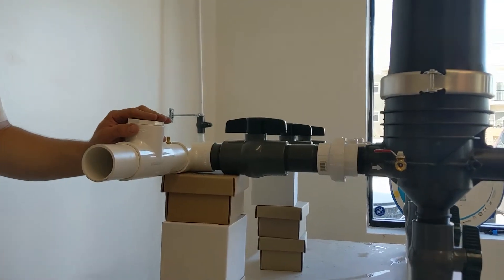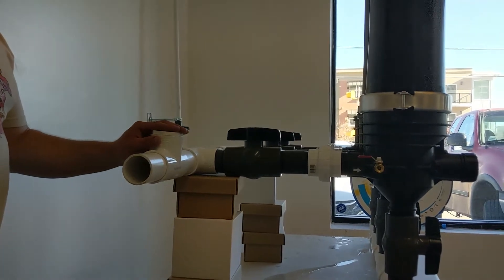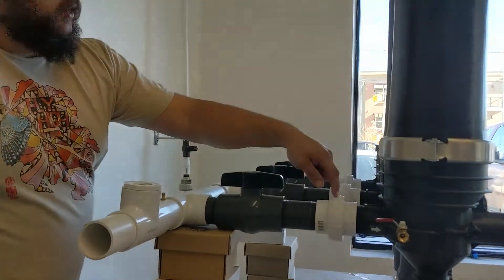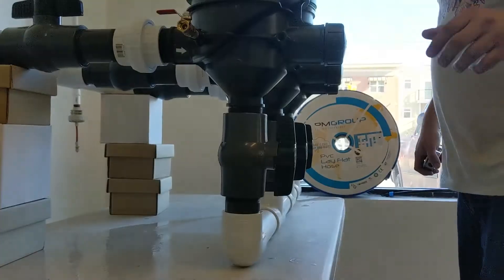This would be at the input side of a filter system like this. In this case it's a two inch PVC line. These are two inch ball valves. These are two inch unions. Two inch ball valves on the outflow as well.